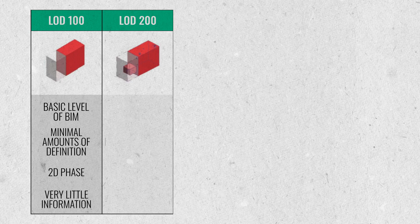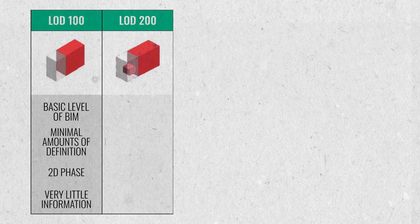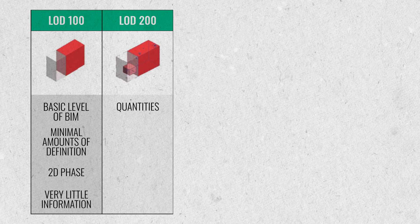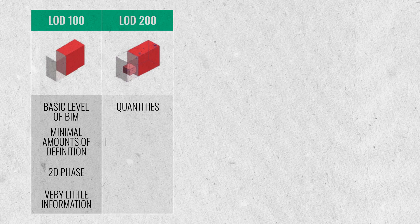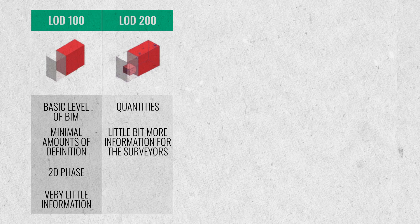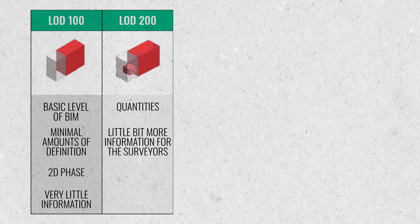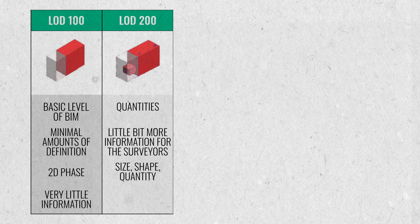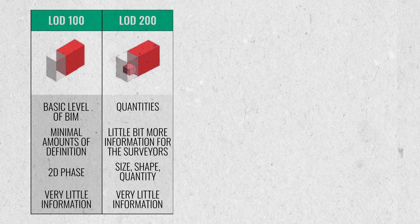LOD 200 introduces things such as quantities — the number of elements, how many beams of this type do you have — getting a little more information into the model that helps quantity surveyors cost out the project. But it's only really about size, shape, and quantity; you're lacking specific details about each element in that project.